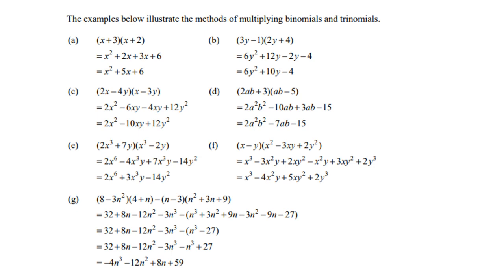Look at B. 3Y times 2Y is 6Y squared, 3Y times 4 is 12Y. Negative 1 times 2Y is negative 2Y, and negative 1 times 4 is negative 4. Then again, collect the like terms. 12Y minus 2Y is 10Y.